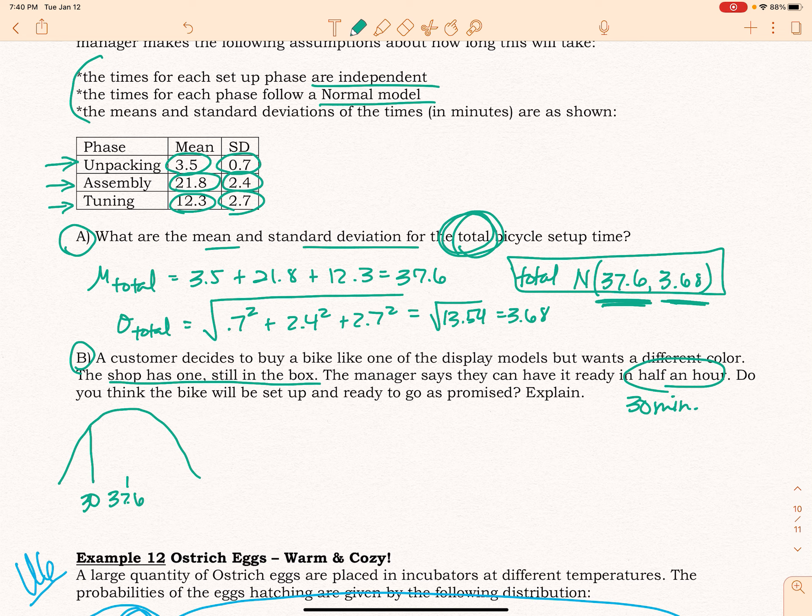So how likely is it that this bike is going to be done in as little as 30 minutes? If I take the probability approach, I've got to have an area under the curve that I'm finding the probability of—the area that represents the probability it will get put together in 30 minutes or less.